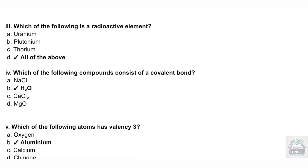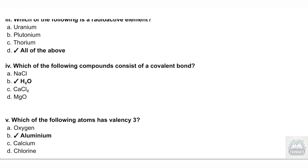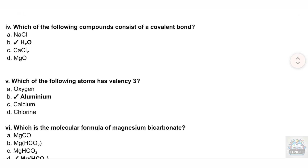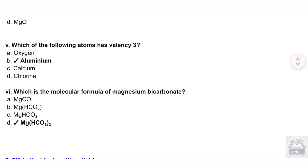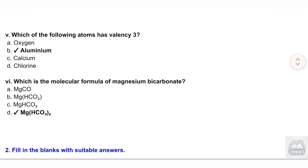Question 4: Which of the following compounds consist of a covalent bond? Question 5: Which of the following atoms has valency 3? A. Oxygen, B. Aluminium, C. Calcium, D. Chlorine.